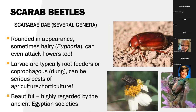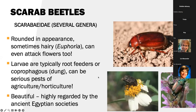The next group: scarab beetles. Everyone knows what a scarab beetle looks like, but these are great beetles. They're round in appearance, sometimes hairy. Euphoria is the Indian flower bumble beetle — they can actually attack flowers. I've seen Euphoria attack cut plants before. Larvae are typically root feeders or feeding on dung, and they can be serious pests of ag and horticulture. Bottom right, we have the Japanese beetle — ISDA is actually spraying right now in Caldwell for Japanese beetles. They are beautiful beetles, highly regarded by ancient Egyptian societies. But they can be pollinators, especially with those hairs and mouthparts.